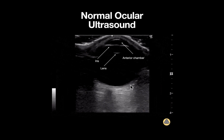Deep to this is our retina layer, which normally is indistinguishable from the back of the eye unless there's a detachment. This hypoechoic area here is our optic nerve.